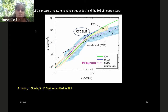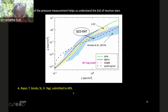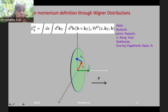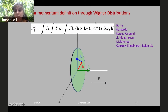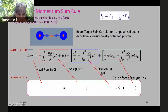The C form factor is particularly important because it helps us understand the equation of state of neutron stars, as shown in our paper submitted to Astrophysical Journal Letters. Our calculations reproducing the Jefferson Lab data give the black curve. Another major highlight is the orbital component of angular momentum, which requires going through a Wigner distribution having both transverse momentum and transverse distance components simultaneously.